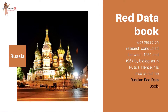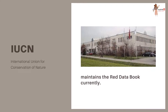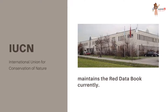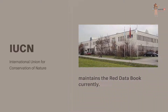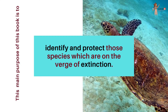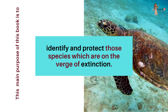It is based on the research conducted between 1961 and 1964 by some Russian biologists, and is therefore sometimes referred to as the Russian Red Data Book. Currently, it is being maintained by IUCN, which is the International Union for Conservation of Nature. The main purpose of this book is to identify and protect those species which are on the verge of extinction.